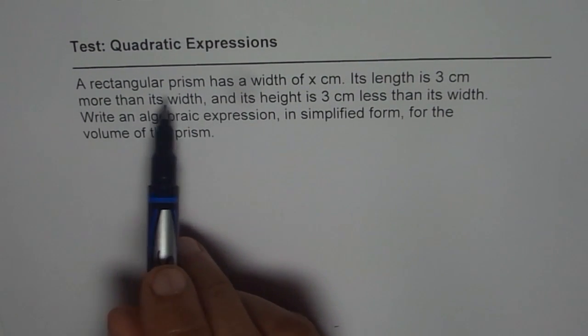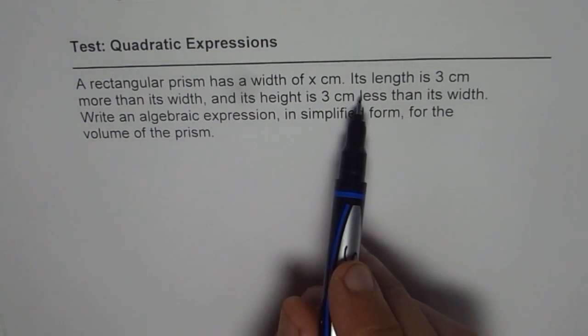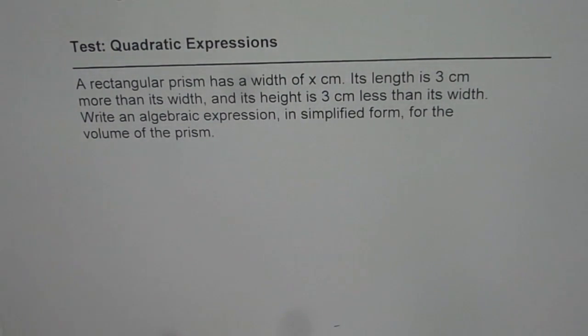A rectangular prism has a width of x centimeters, its length is 3 centimeters more than its width, and its height is 3 centimeters less than its width. Write an algebraic expression in simplified form for the volume of the prism.